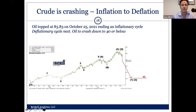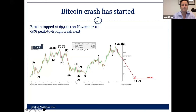Crude has already started to crash. And then lastly, the Bitcoin market, which is significantly overvalued, should also start to crash. Bitcoin, we believe, topped at around 70,000. Once Bitcoin starts to go down, the decline should be significant — we expect it to be like a 95% peak-to-trough decline, and for Bitcoin to revisit the lows it reached in December of 2018, which is about 3,000.